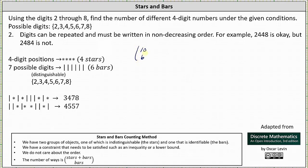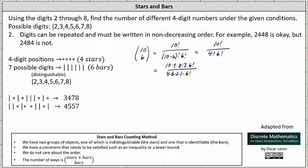And ten choose six is equal to ten factorial divided by the product of ten minus six factorial and six factorial, which is ten factorial divided by the product of four factorial and six factorial. Let's simplify. Ten factorial is equal to ten times nine times eight times seven times six factorial, all divided by four times three times two times one times six factorial. Simplifying, six factorial divided by itself simplifies to one. In the denominator, four times two is eight; eight divided by eight simplifies to one. Nine and three share a common factor of three, leaving one three in three and three threes in nine. We're left with ten times three times seven, which is 210. There are 210 different four-digit numbers in which the digits can be repeated and must be written in non-decreasing order.